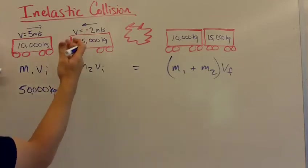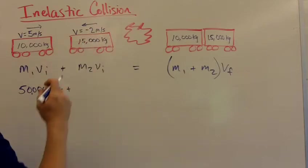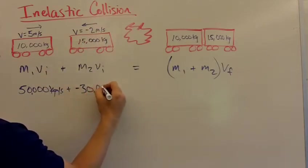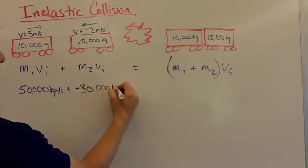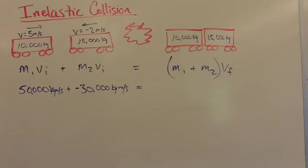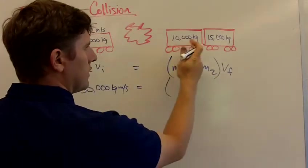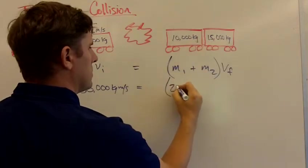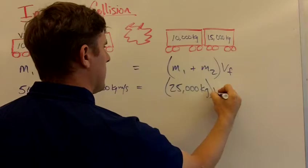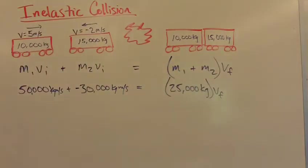Added to negative 2 meters per second, because it's going this way, times 15,000. That's negative 30,000 kilogram meters per second. And we're going to add these masses together. So m1 plus m2, that's 10,000 plus 15,000, is 25,000 kilograms. And that times the final velocity for both cars stuck together is going to be our answer.